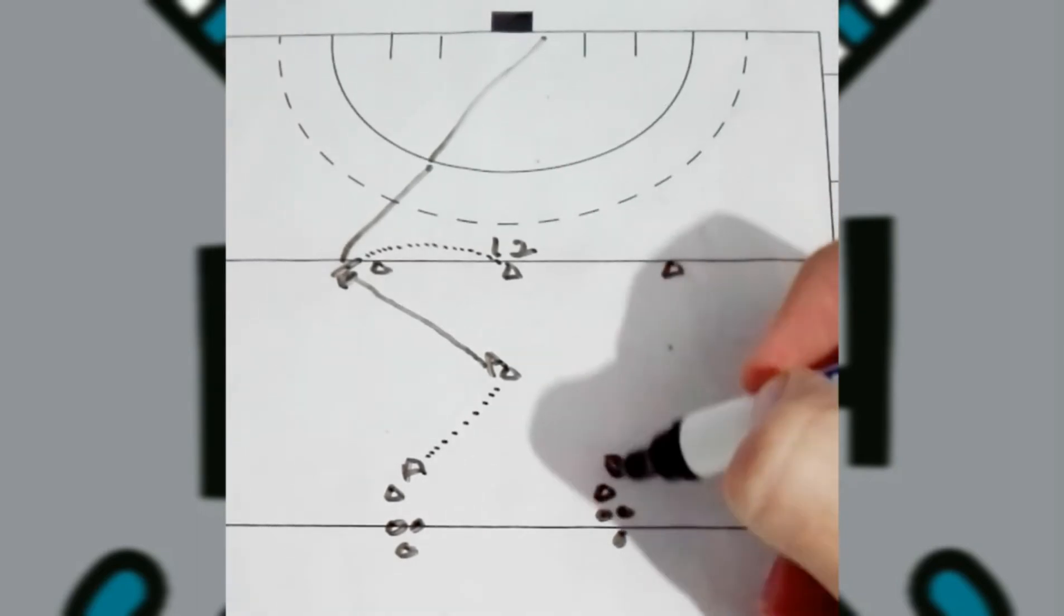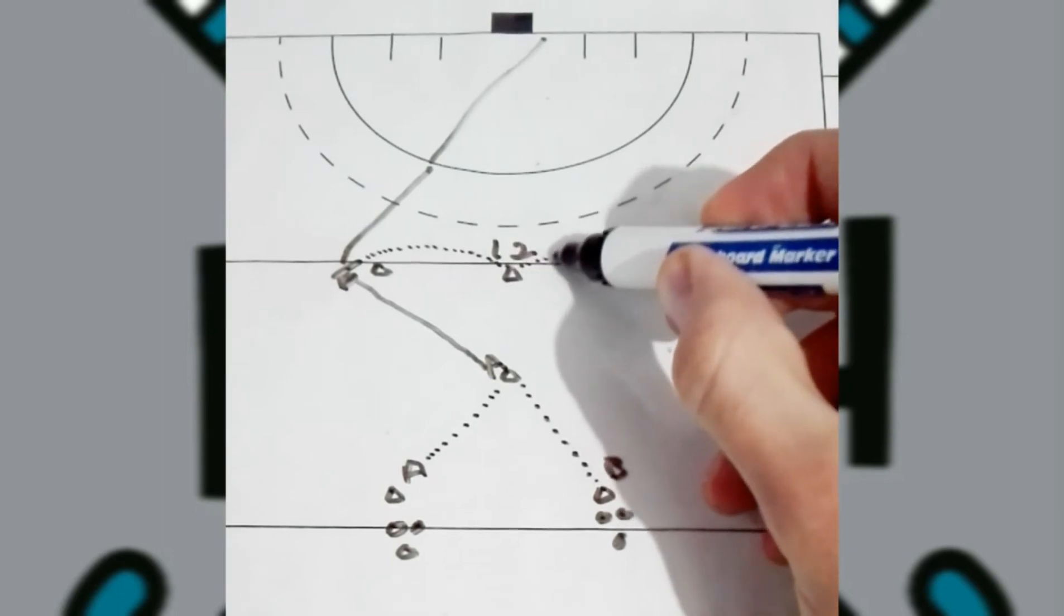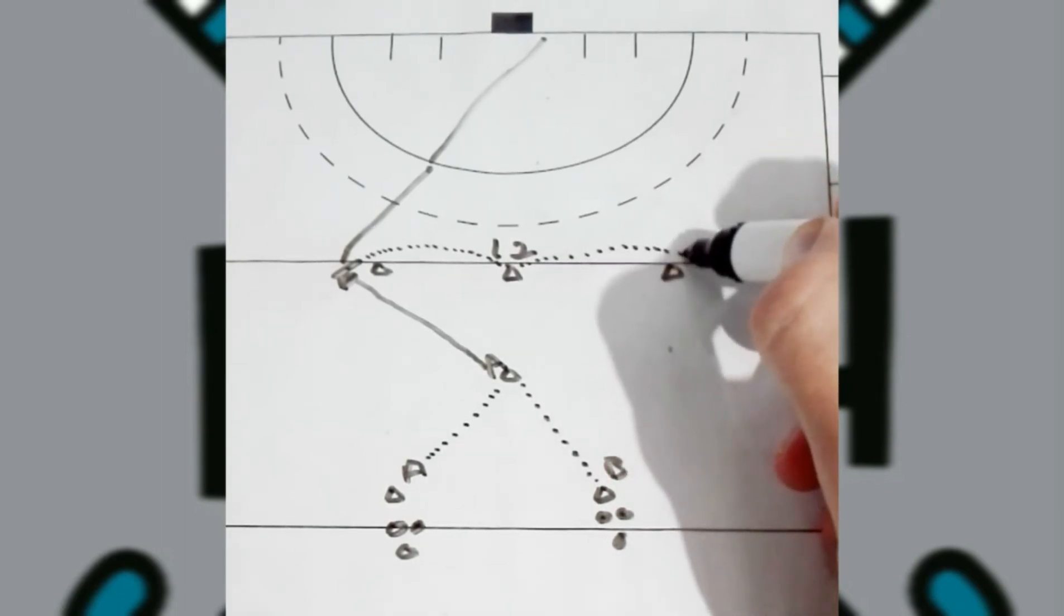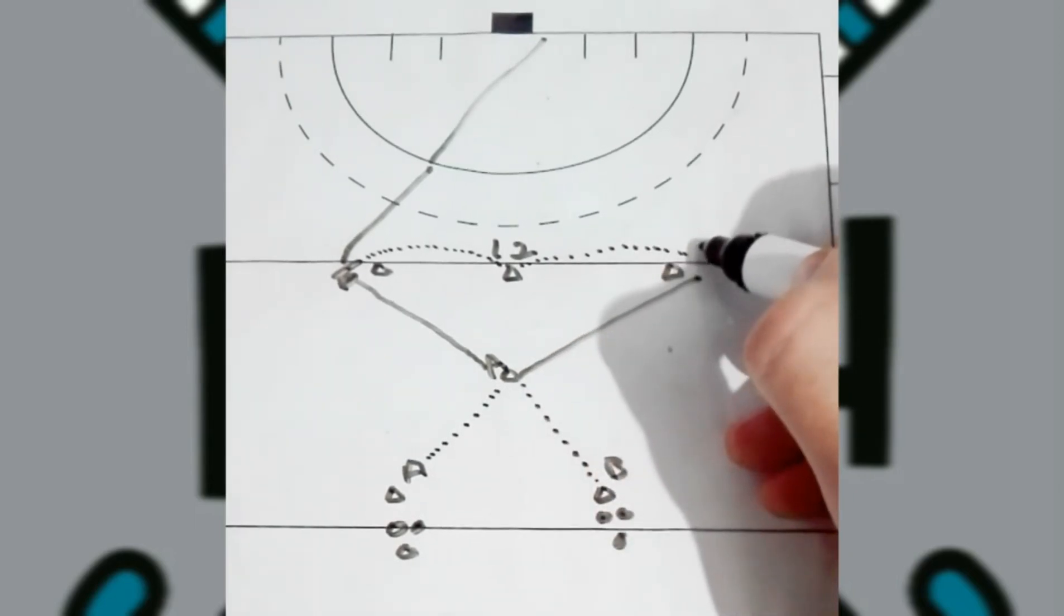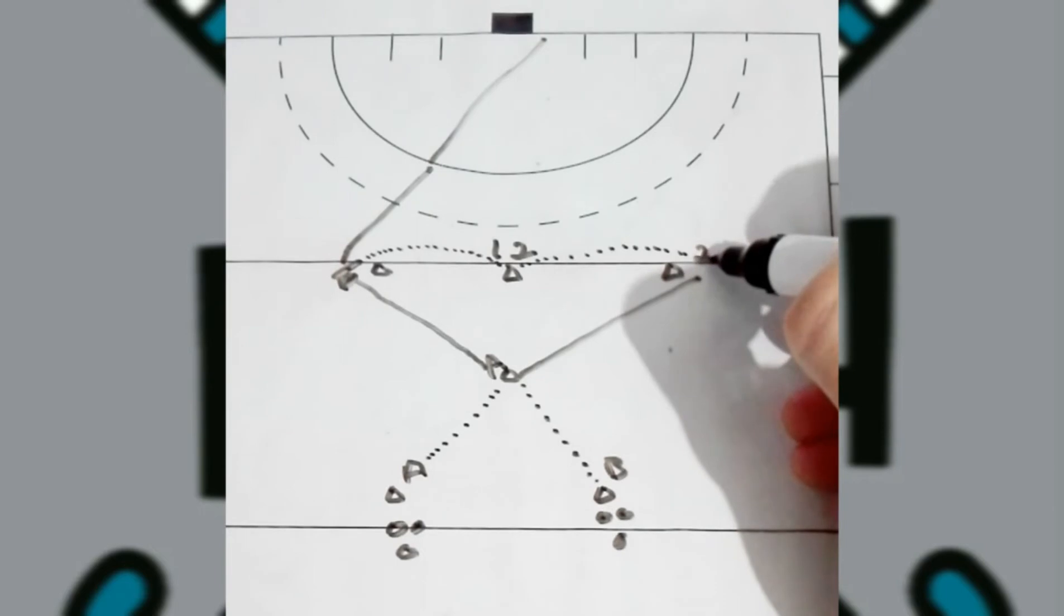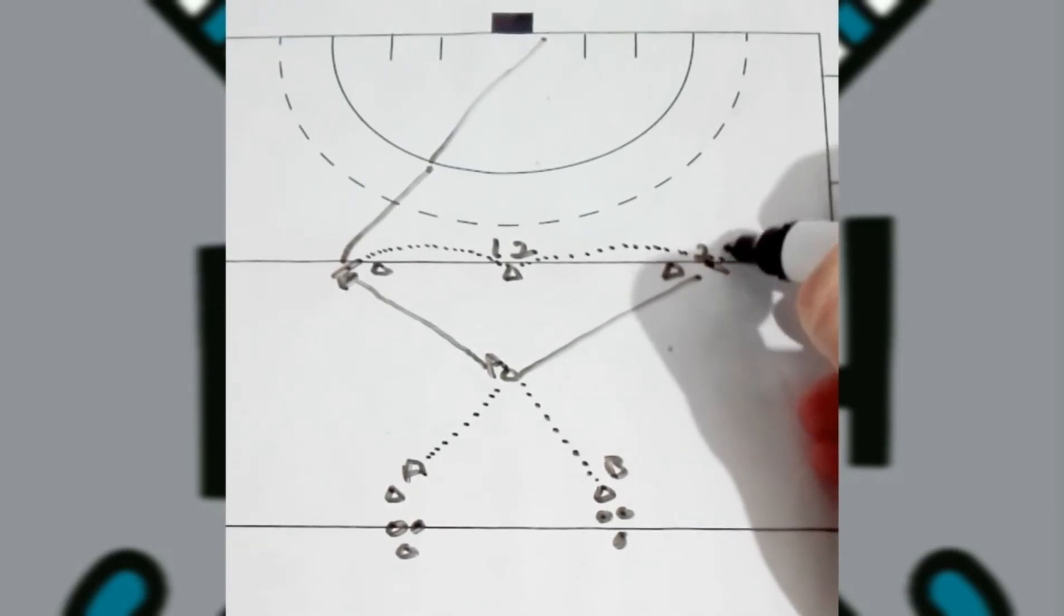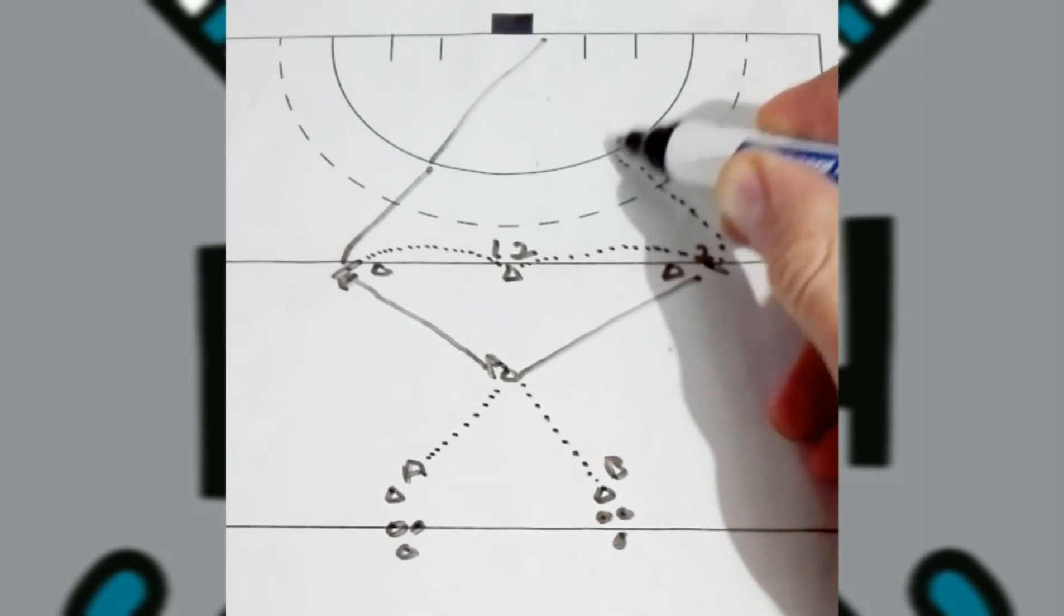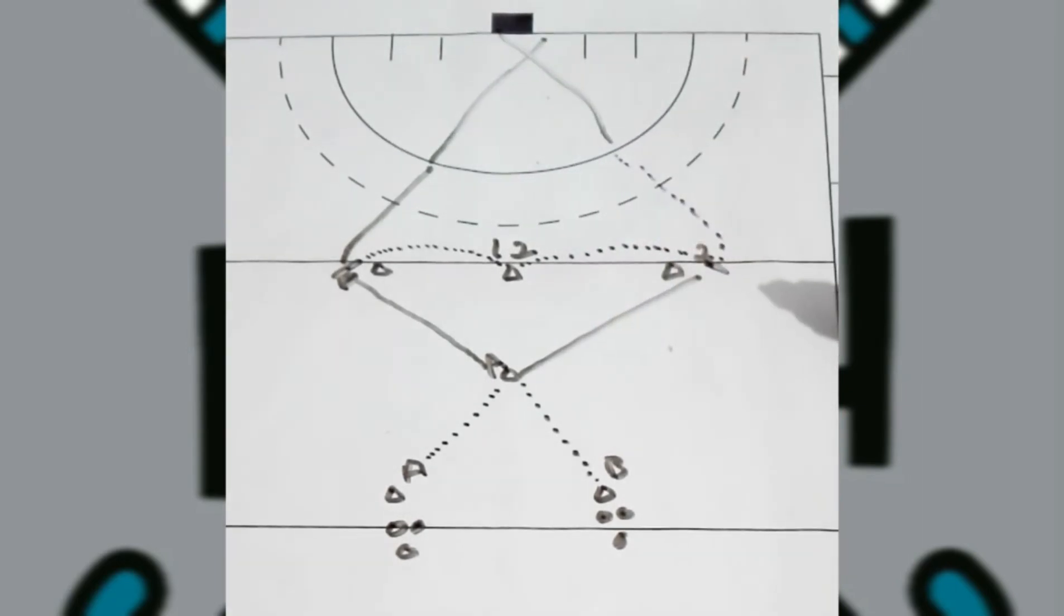As soon as this is done, player B will dribble towards the middle cone. Player two, while that's happening, will run to the far side cone. Player B will pass the ball to player two. Player two will receive on the reverse, dribble towards the line, and make a strong stick shot towards the goal.